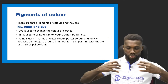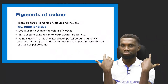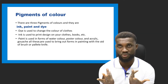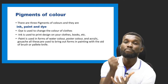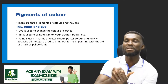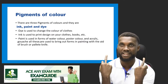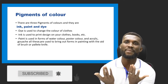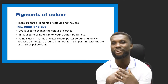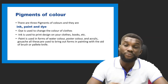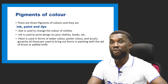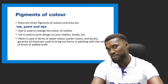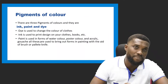Dye is used for clothes — to change the color of a fabric. In school you should have heard of the word tie and dye. Remember: color is not a thing, it's an illusion — it is what you perceive with your eye. You cannot touch it; what you touch is the pigment. Now, paint is used in forms of watercolor, poster color, acrylic, and gouache — these are used to bring out forms in a painting, aiding the brush or palette knife. There are three major pigments of color: ink, paint, and dye.